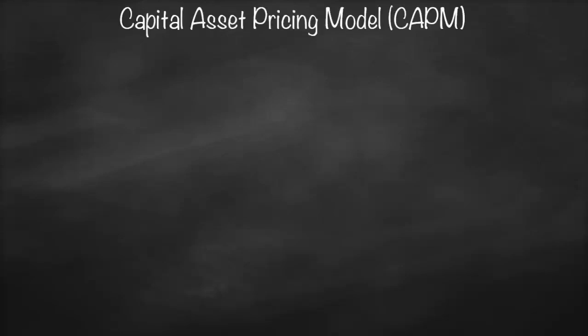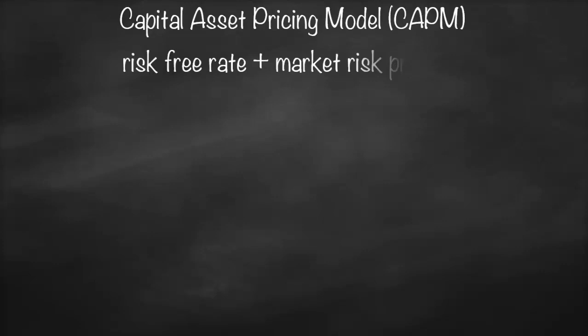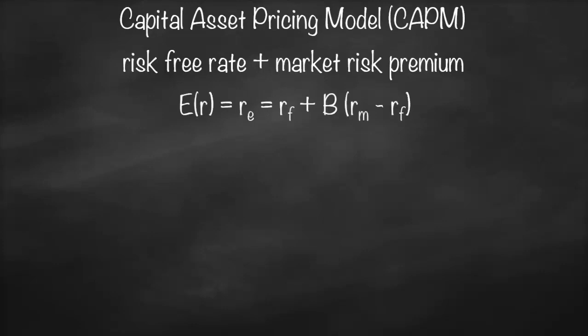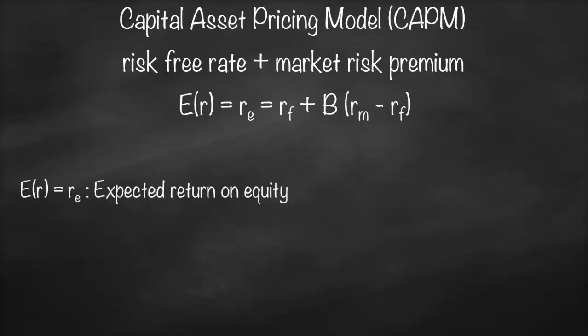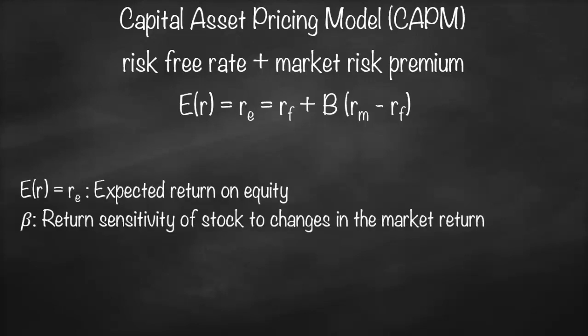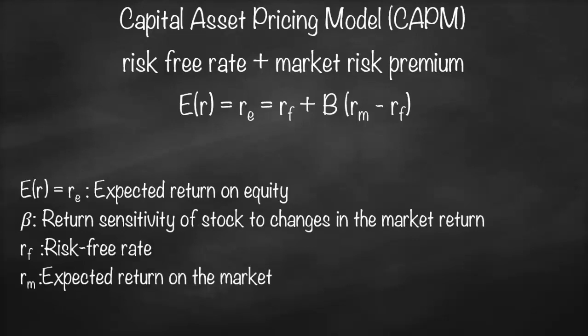The Capital Asset Pricing Model, or CAPM, is a model used to estimate our expected return or cost of equity. Therefore the formula is: risk free rate plus the market risk premium, or equity risk premium. Our expected return — which is the same as cost of equity, written as RE — equals the risk free rate RF, which refers to the US Treasury bond, for example, meaning bonds issued by the government.